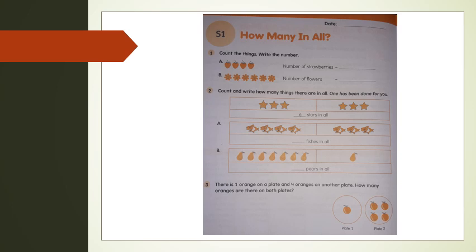You can see 6 stars. How you got 6? By counting 1, 2, 3, 4, 5, 6. Okay. Next two questions you have to do. What about third question? There is one orange on a plate and four oranges on another plate. How many oranges are there on both plates? You have to count and write your answer.